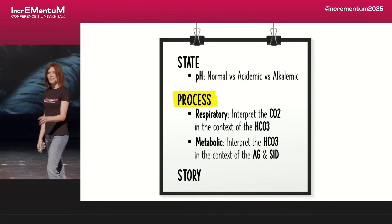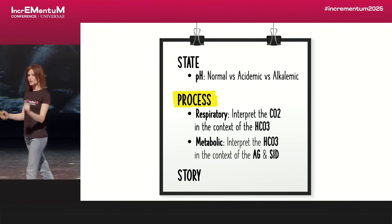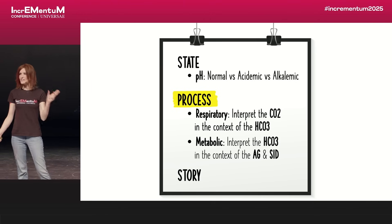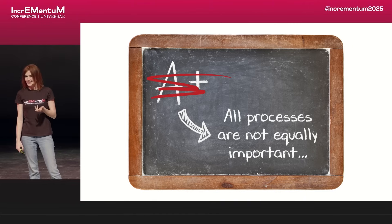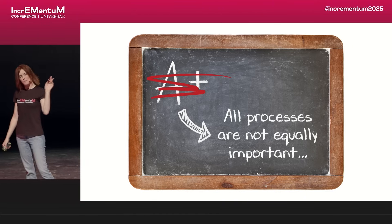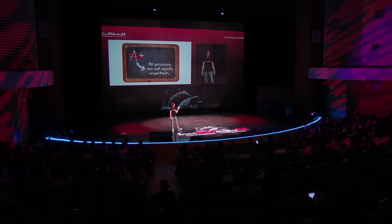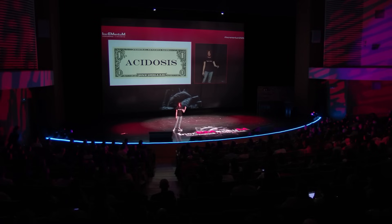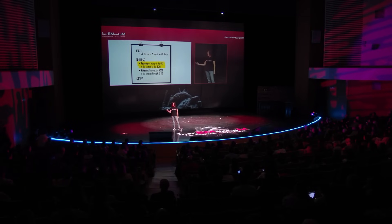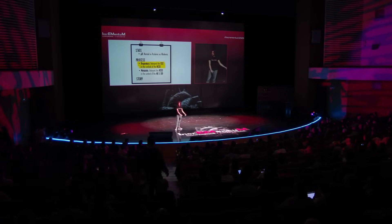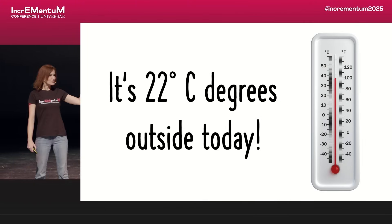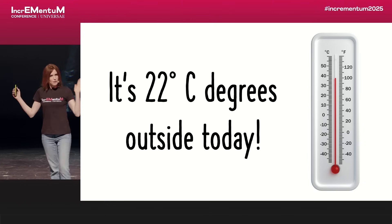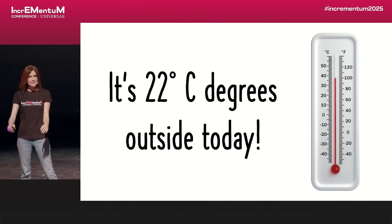The easier process is the respiratory process. You're going to interpret the CO2 in the context of the bicarb. At the bedside, we're not going to talk about all possible processes — we're going to focus on the important ones in sick patients. Acidosis is where the money is, so we're going to focus on acidosis. Why do you need to interpret the CO2 in the context of the bicarb? It's like the weather — if I say it's 22 degrees outside, it really matters if I'm in Alaska or in Death Valley. That number means two very different things depending on context, and CO2 is the same — it's essentially a meaningless number without the context of the bicarb.